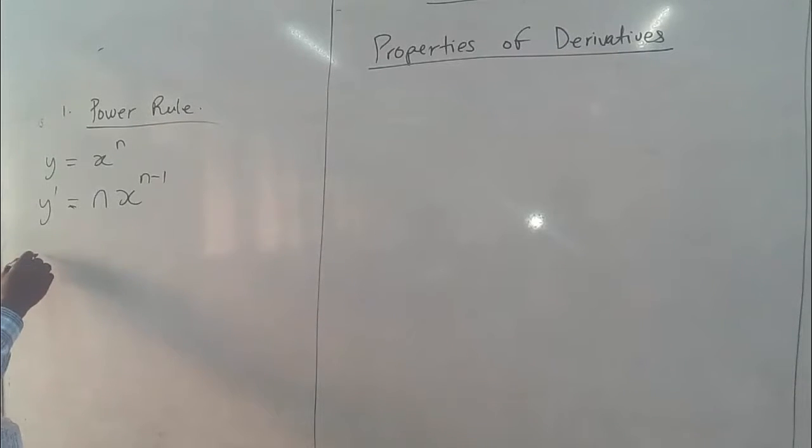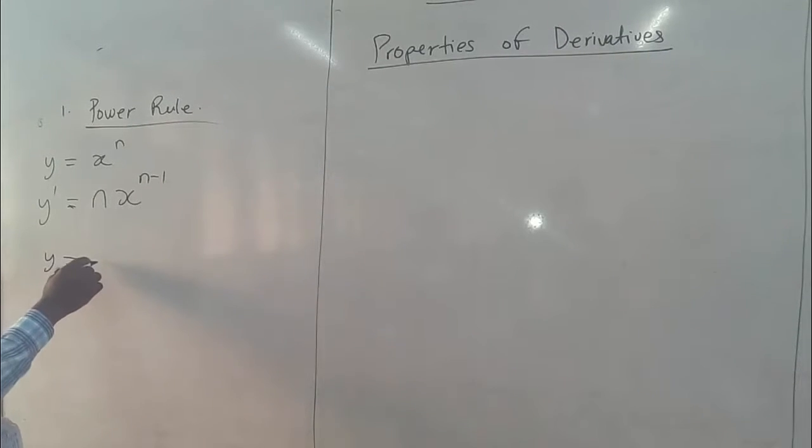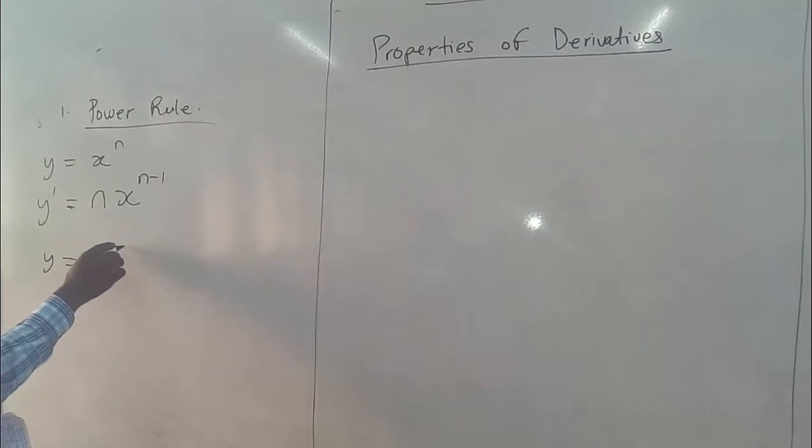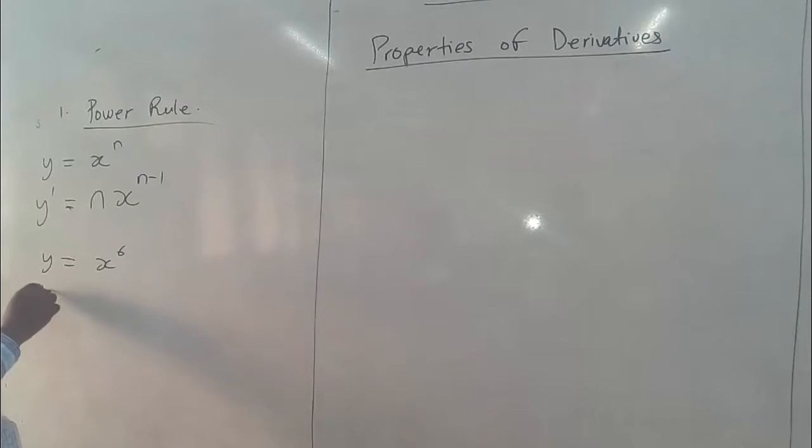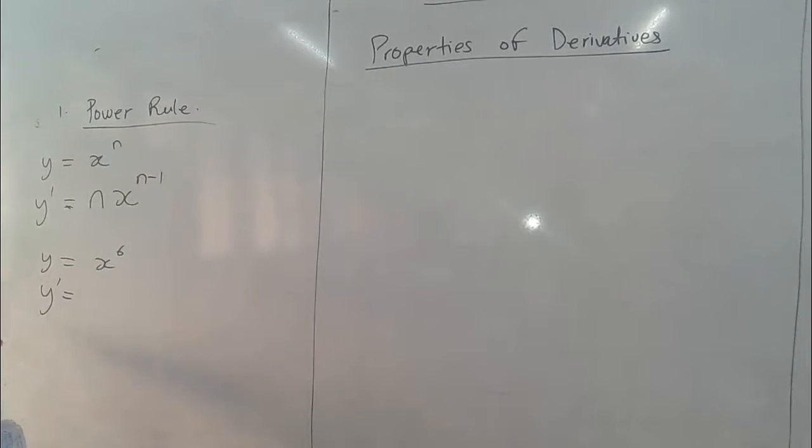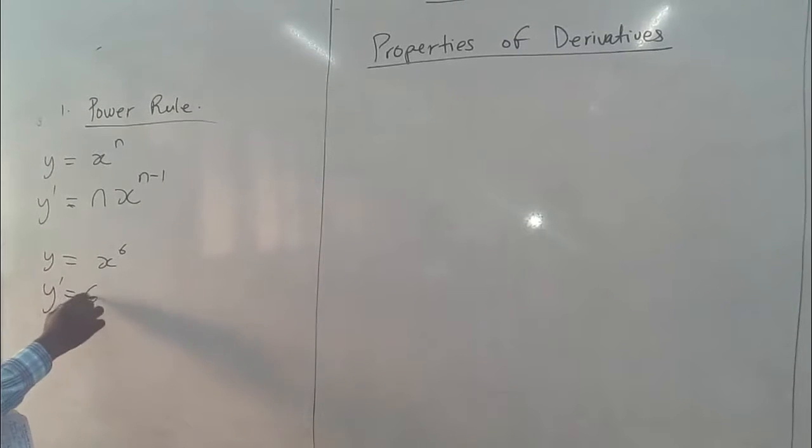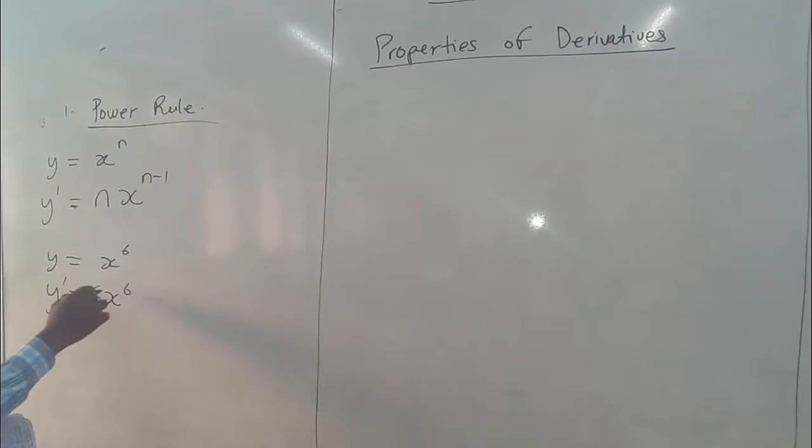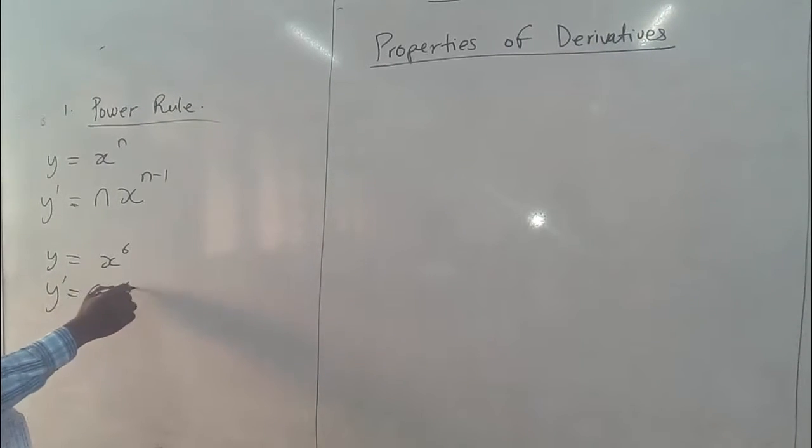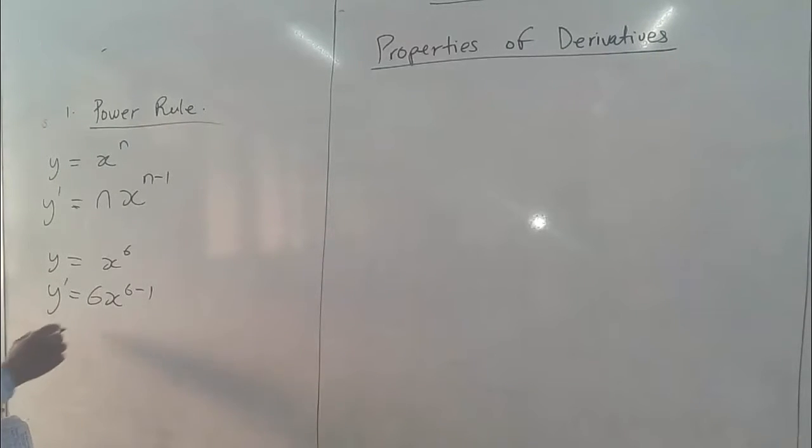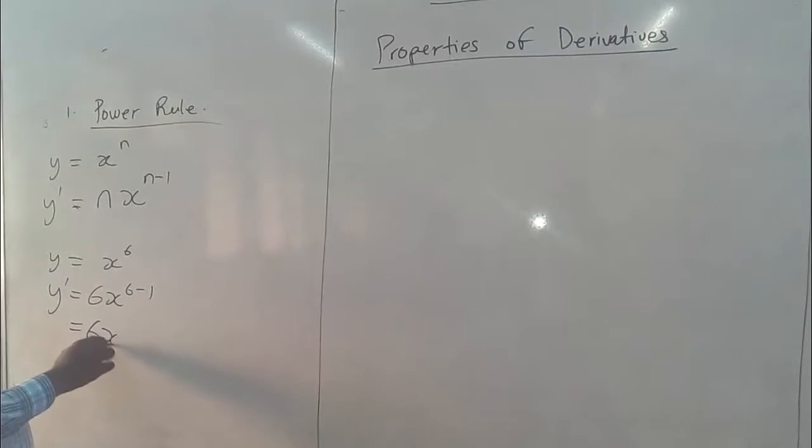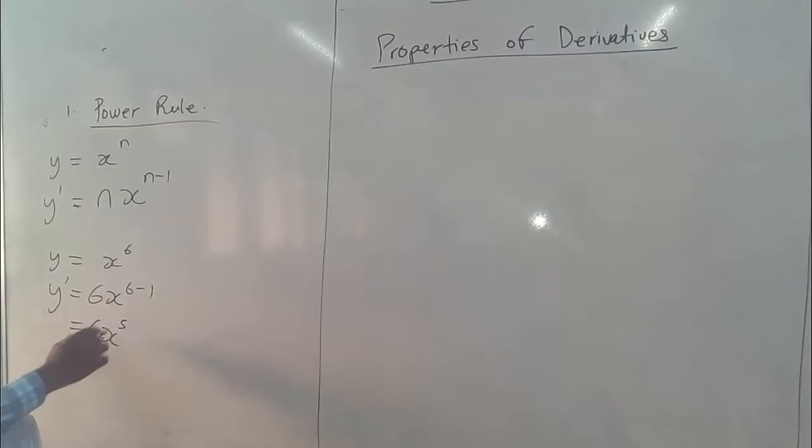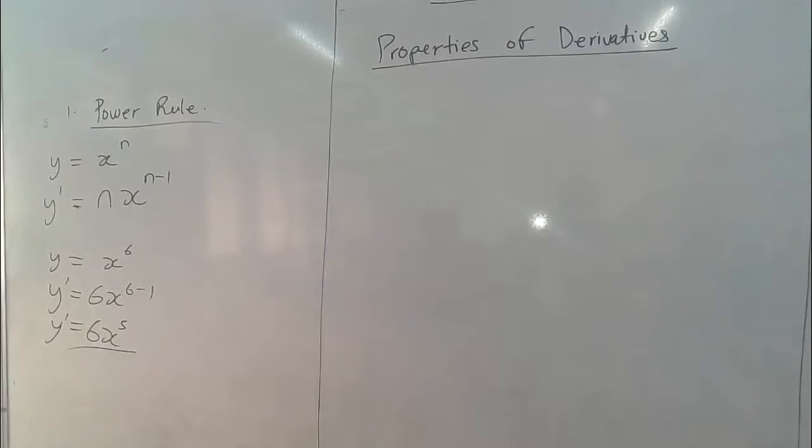To write this in an actual term, assuming we have y to be equal to h to the power 6. To find y prime, that's the first derivative, we multiply h to the power 6 by the power which is 6, then we subtract 1 from the power, then we have 6h to the power 5. So this becomes our first derivative.